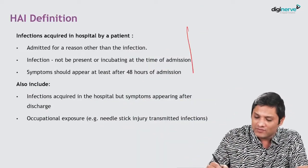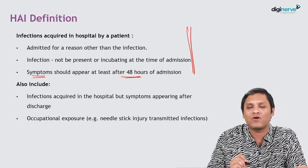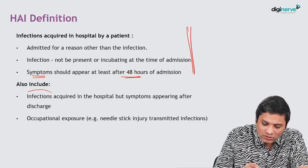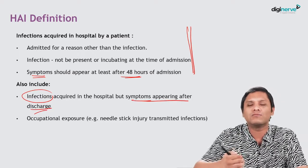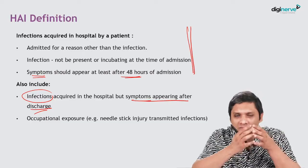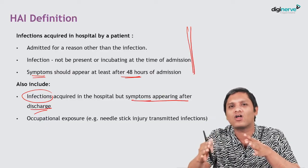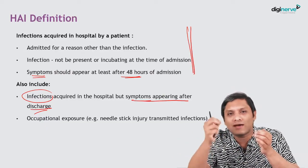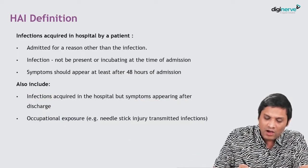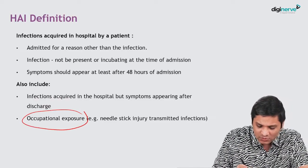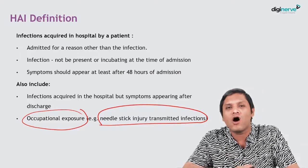Remember that infections which happen inside the hospital where symptoms appear after 48 hours of admission should also include those infections where symptoms appear after discharge. If the patient acquired the organism in the hospital and symptoms appear immediately after discharge — on the day of discharge or the next day — then you should label that infection as HAI. One more important component of HAI is occupational exposure, such as needle stick injury-related transmission.